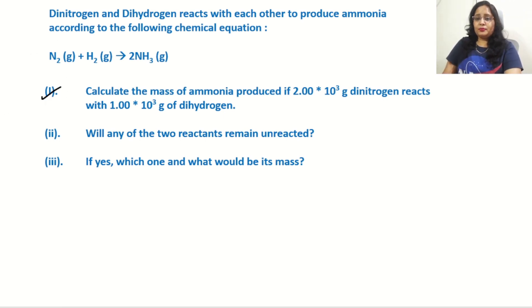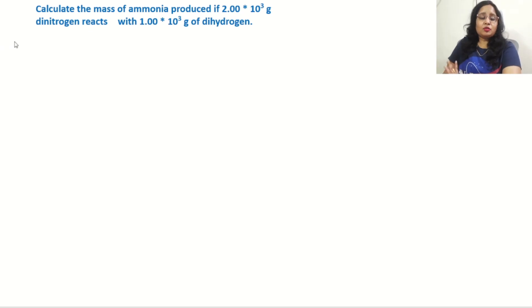First, we need to check if the reaction is balanced. The equation is N₂ + H₂ → 2NH₃. On the left side we have 2 nitrogen atoms and 2 hydrogen atoms. On the right side we have 2 nitrogen and 6 hydrogen. So we need to add a coefficient of 3 to H₂. Now the balanced equation is N₂ + 3H₂ → 2NH₃.